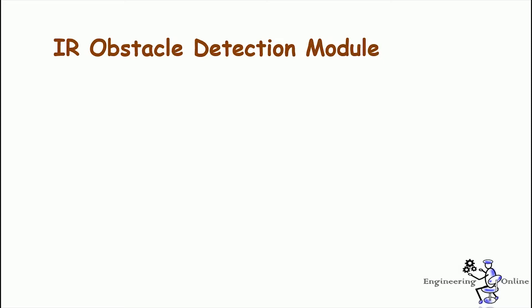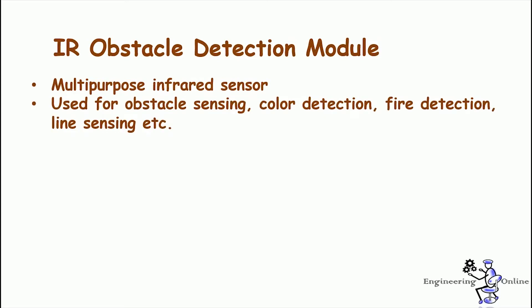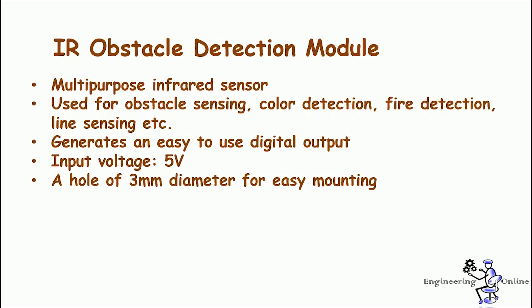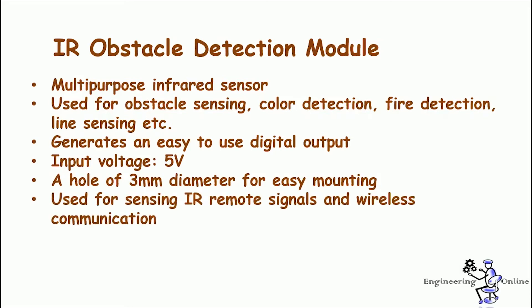This is a multi-purpose infrared sensor and it can be used for obstacle sensing, color detection, fire detection, line sensing, etc. The sensor generates an easy-to-use digital output, either high or low. The sensor outputs a logic 1 when an object is placed in front of the sensor and a logic 0 when there is no object in front of the sensor. This digital output can be directly connected to an Arduino, Raspberry Pi, AVR, PIC, or any other microcontroller to read the sensor output. Its input voltage lies in the range of 3.3 to 5 volts and it can be powered using the Arduino 5-volt pin directly. The sensor has a mounting hole of 3 mm diameter and is mainly used for sensing IR remote signals and wireless communication.